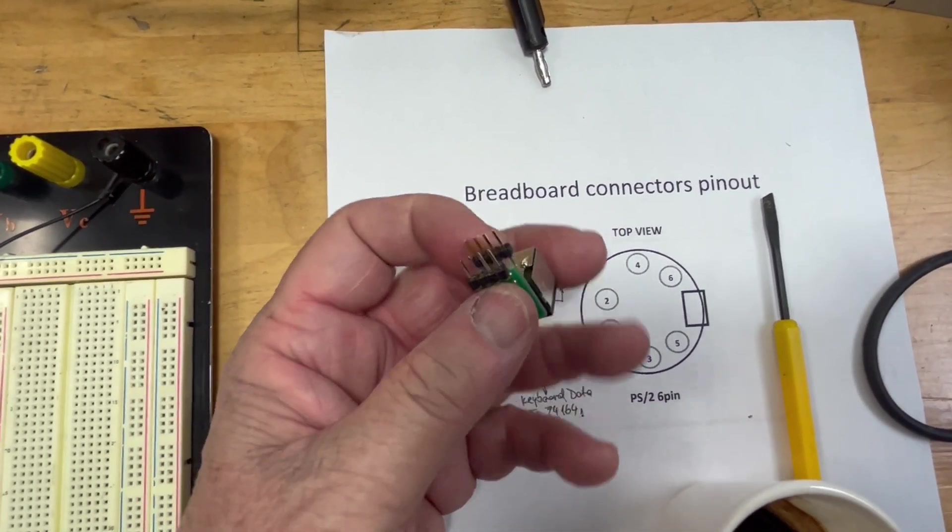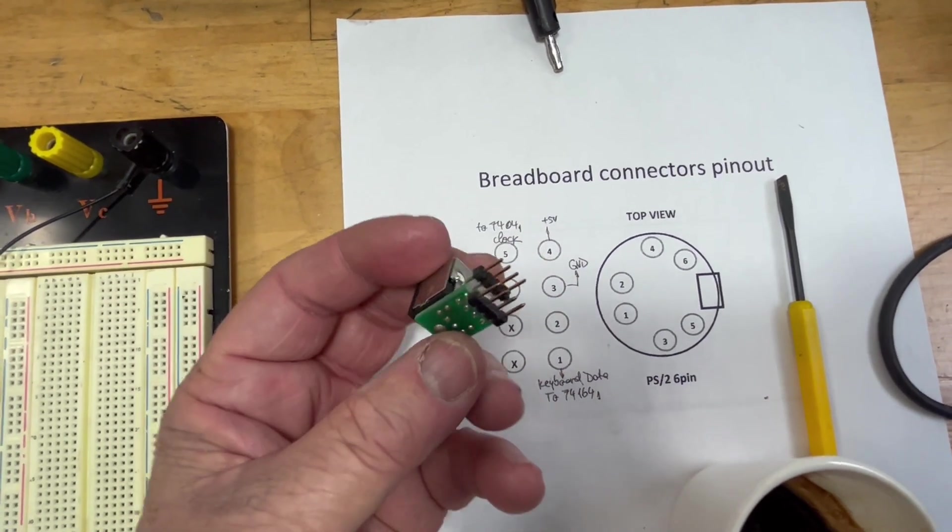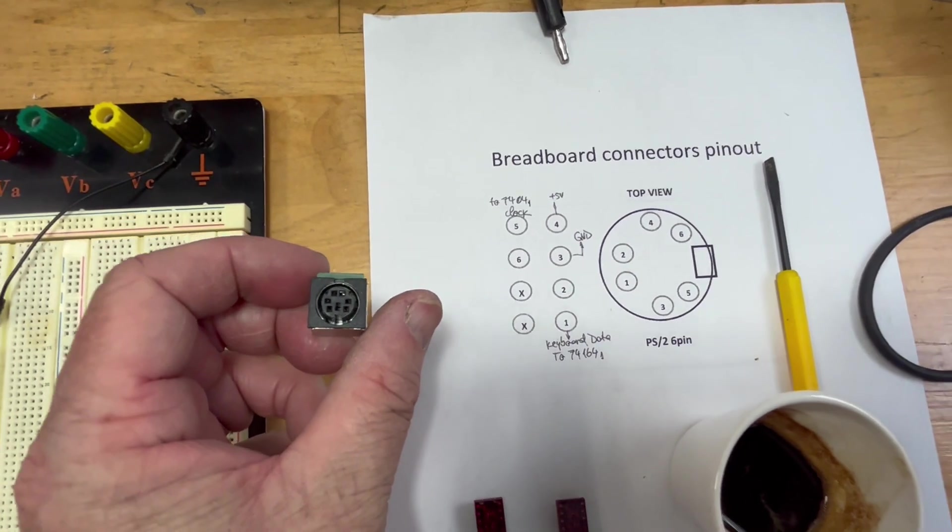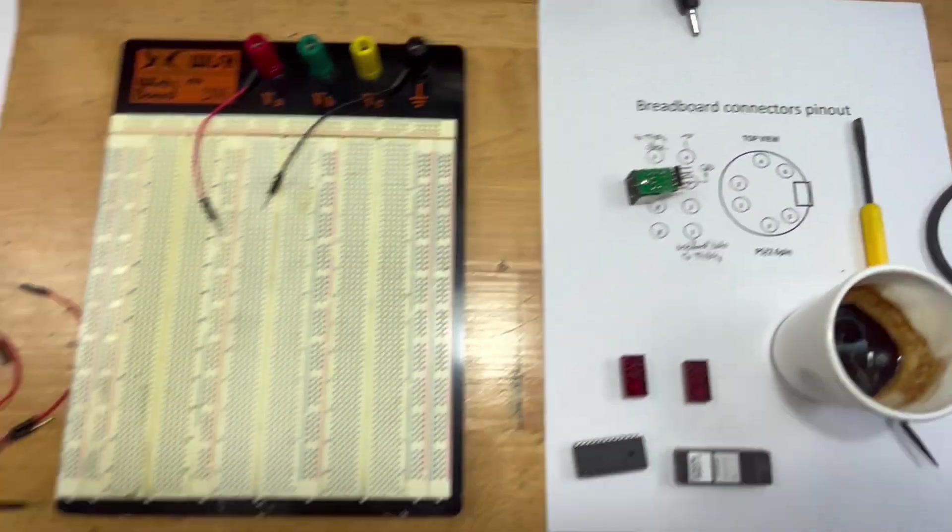This is the connector we're going to use, the PS2 connector to connect our keyboard. But to put it on the breadboard, we need a breakout board like this one because otherwise we won't be able to connect it directly. Let's start the wiring.